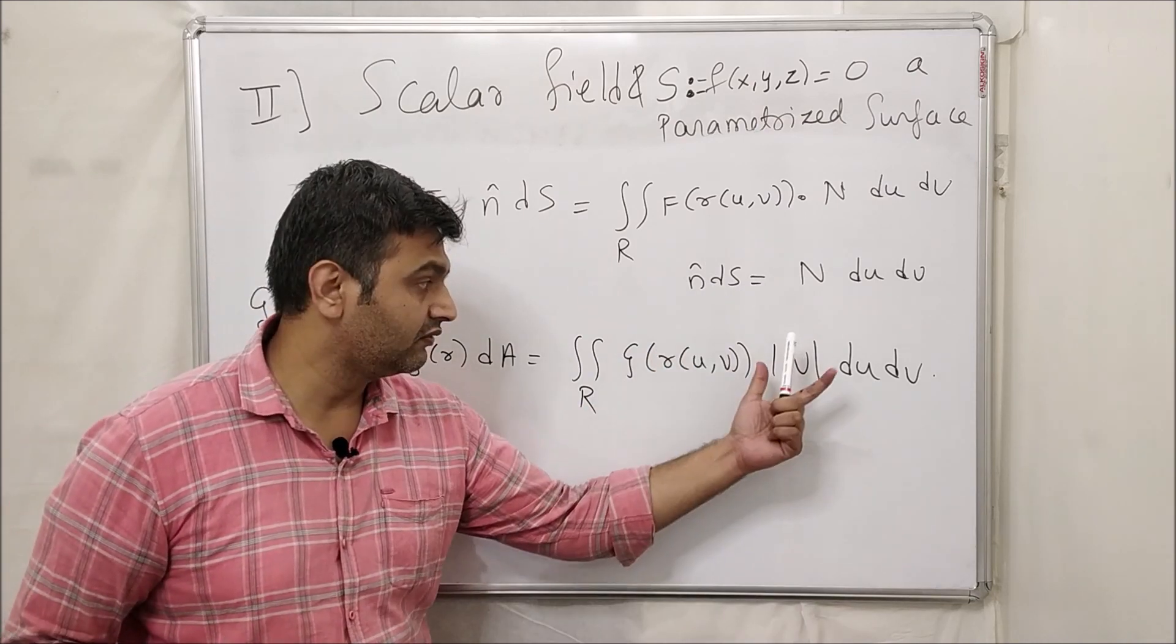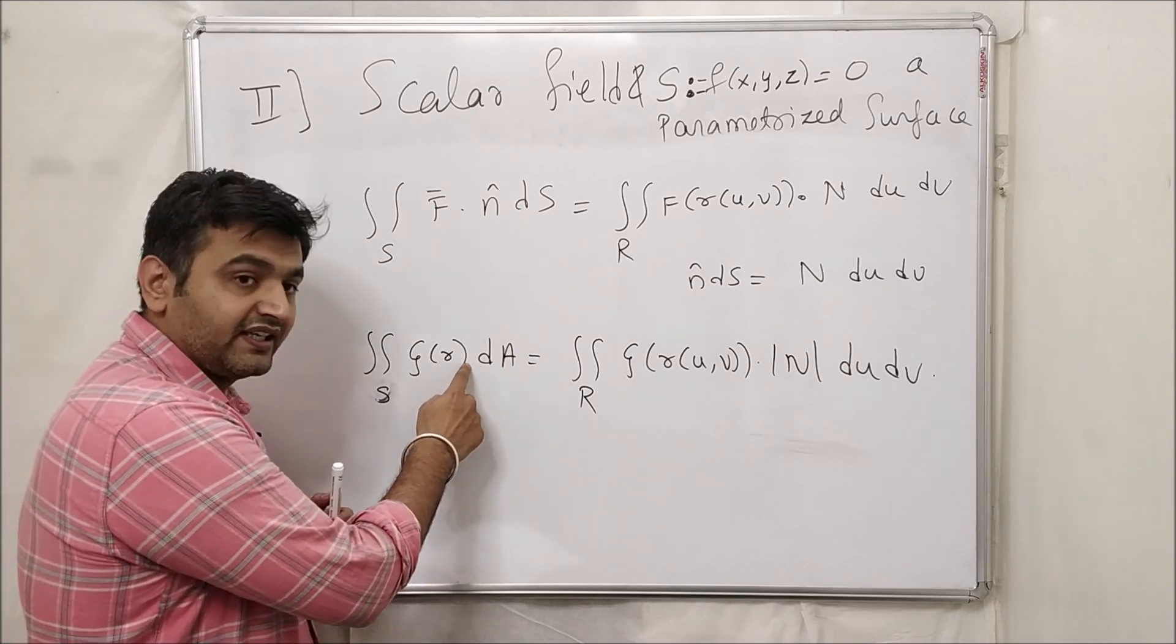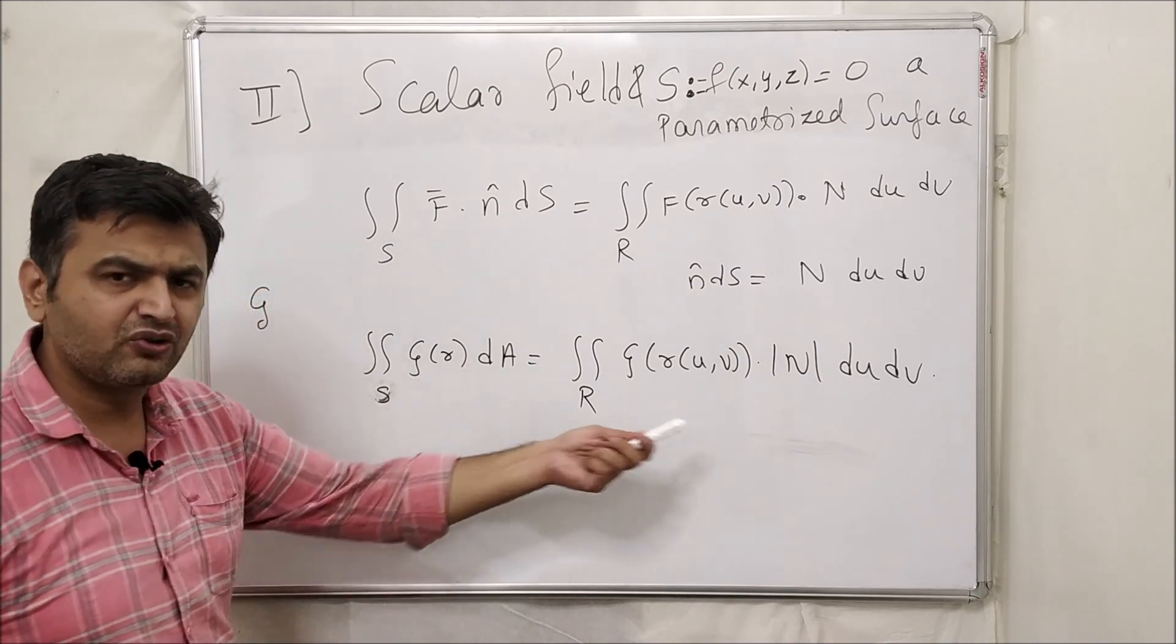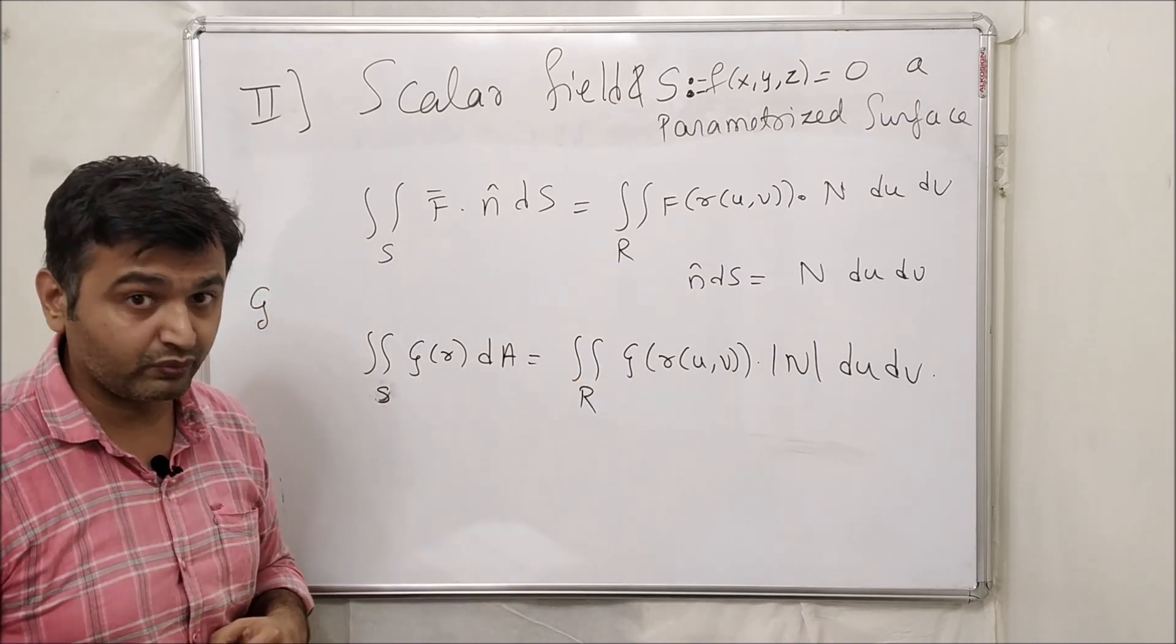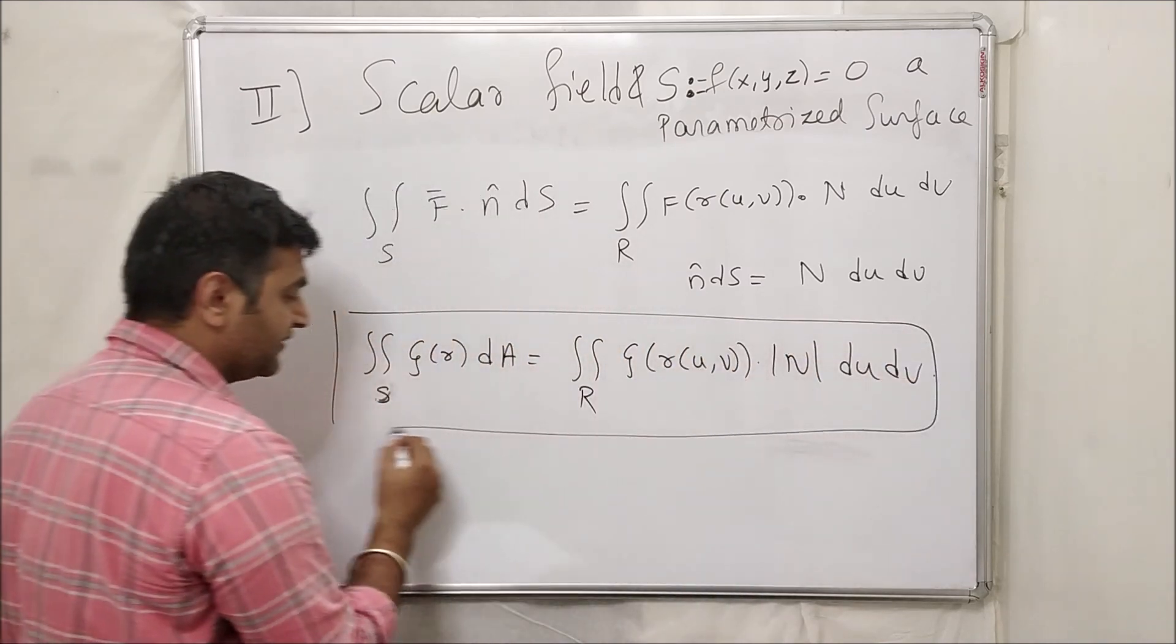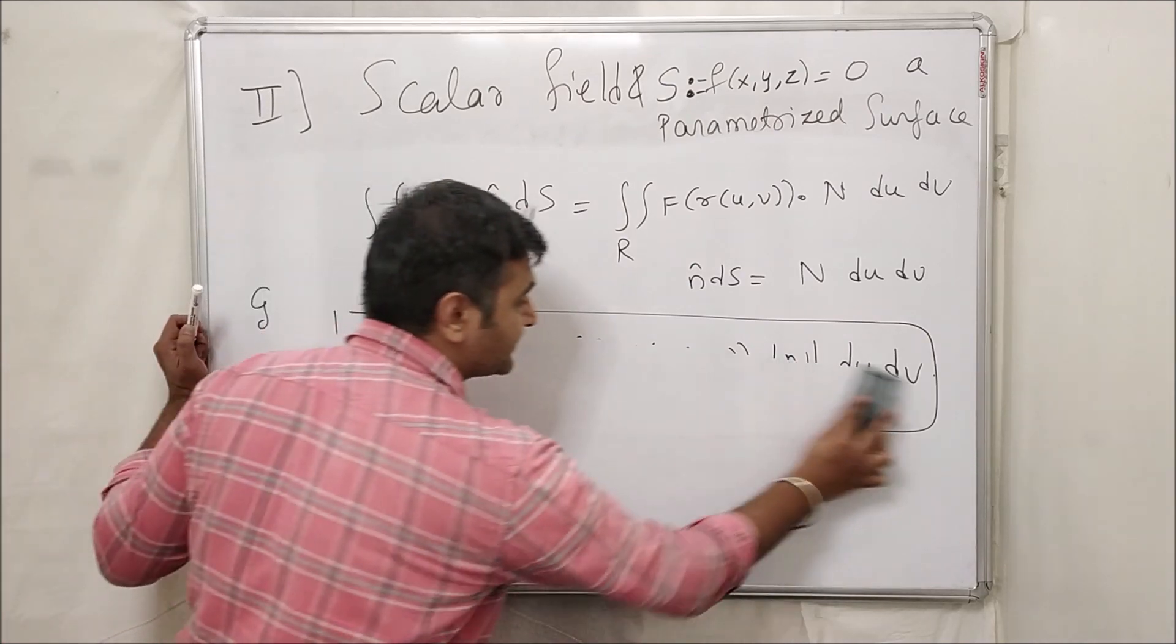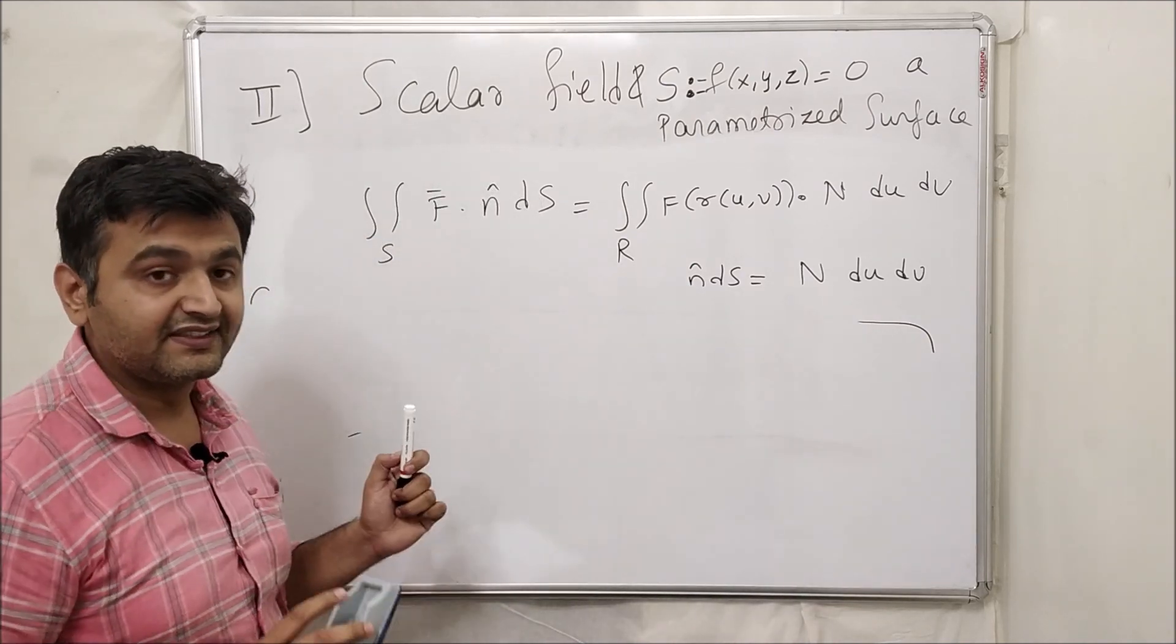Because we are taking the mod, so it's a value over here. And that's why you don't write here dot n into n because it's without orientation. I mean that does not matter over here. So this is the formula to solve a parameterized surface when a scalar field is given to you. Now let's see some example so that this concept will be clear.